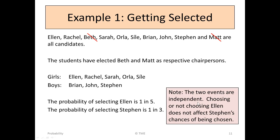Note, the two events are independent. Choosing or not choosing Ellen does not affect Stephen's chances of being chosen. If you have to choose a girl and you choose Ellen or don't choose Ellen, when choosing a boy, Stephen still has a 1 in 3 chance. So these two events are independent. Likewise, the selection of the boy has no bearing at all on your restrictions or options in choosing the girls.